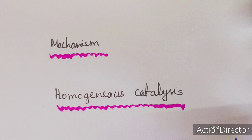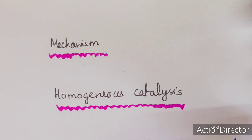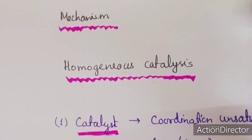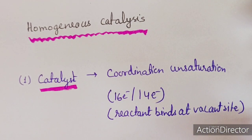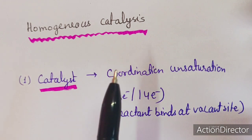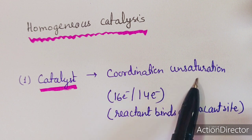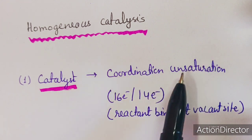If we see the mechanism of homogeneous catalysts, the reactions generally occur in a cycle — a catalytic cycle. A key condition for an organometallic compound to be a homogeneous catalyst is coordination unsaturation. If it is a homogeneous catalyst, then it has coordination unsaturation — it has a 16-electron or 14-electron system; it should not be an 18-electron system.